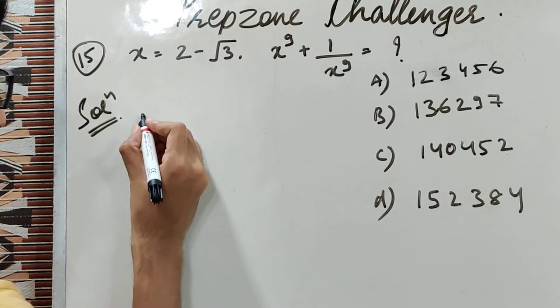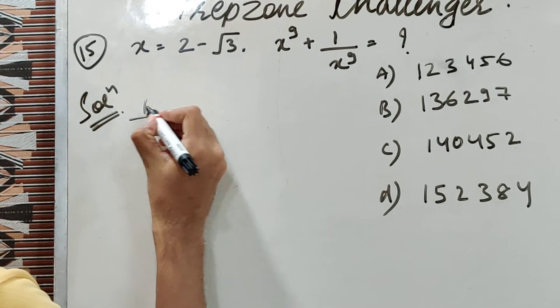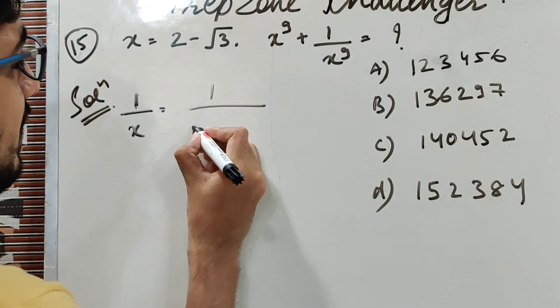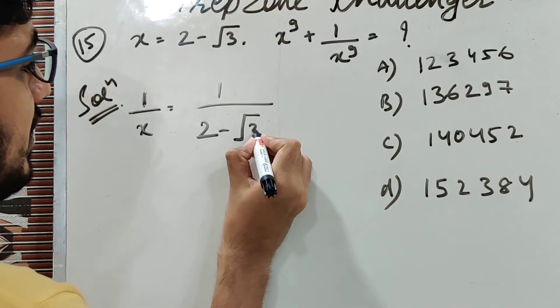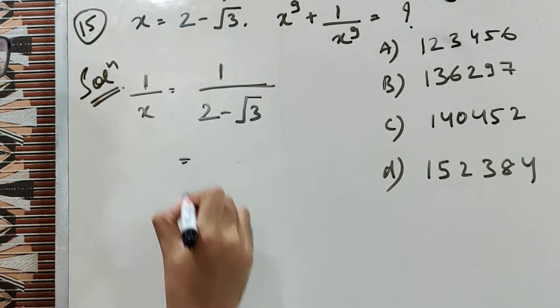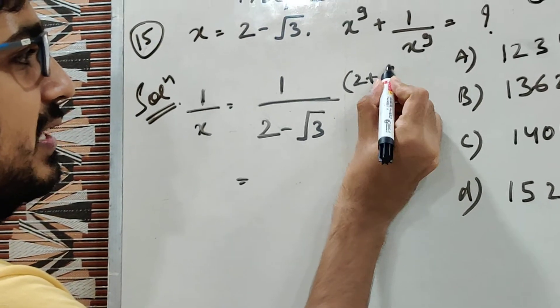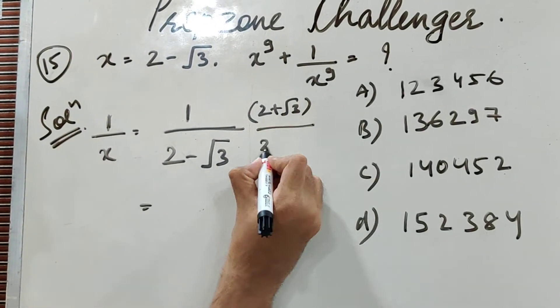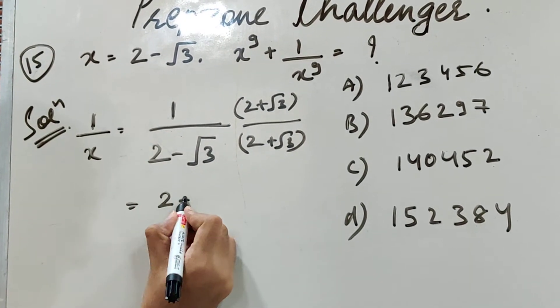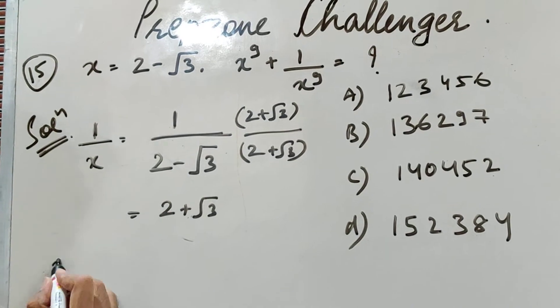So what I will always do is find 1 by x. 1 by x is 1 upon 2 minus root 3. How do I rationalize? I multiply numerator and denominator by the conjugate, which is 2 plus root 3. So 1 by x becomes 2 plus root 3.